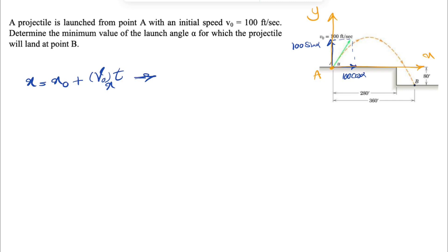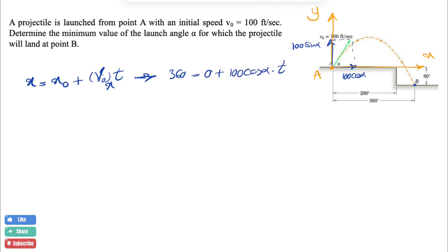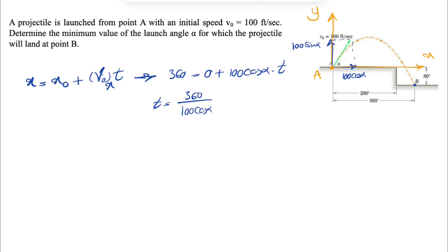Our ending point is point B, since we're trying to land the projectile there. Looking at X, we have 360 feet equals zero plus 100 cosine of alpha times T. We have two unknowns, but we can solve for T: T equals 360 divided by 100 cosine of alpha, which simplifies to 3.6 over cosine of alpha.